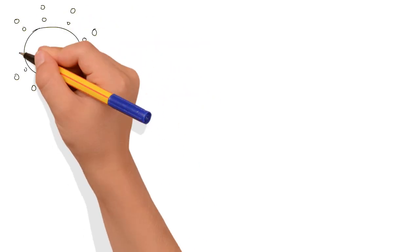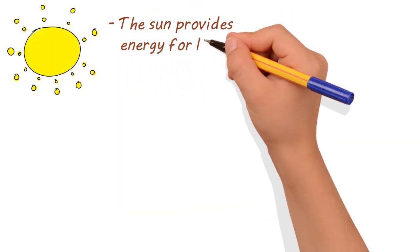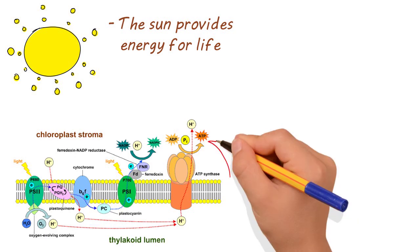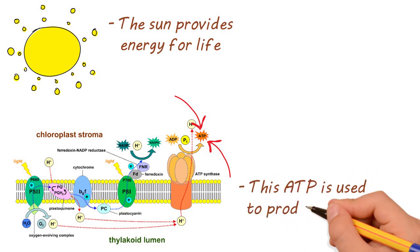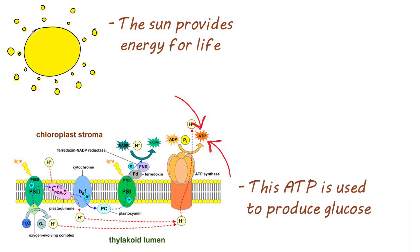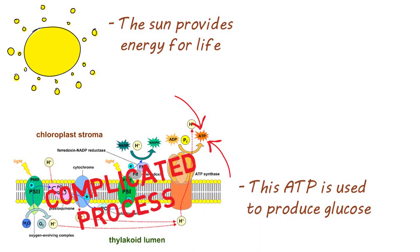The sun is the main and major source of energy for all living things. Plant cells produce ATP through light reactions in the chloroplast during photosynthesis. They then use that ATP to produce sugars like glucose. It's a complicated process that, unfortunately, will not be covered in this video.